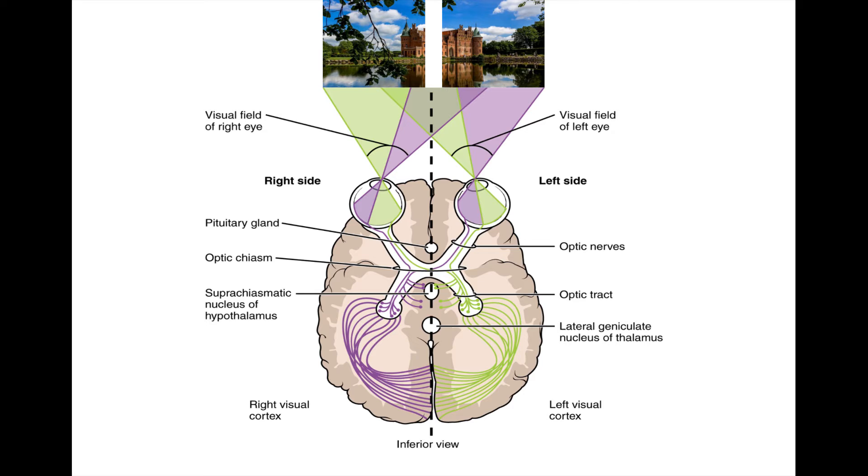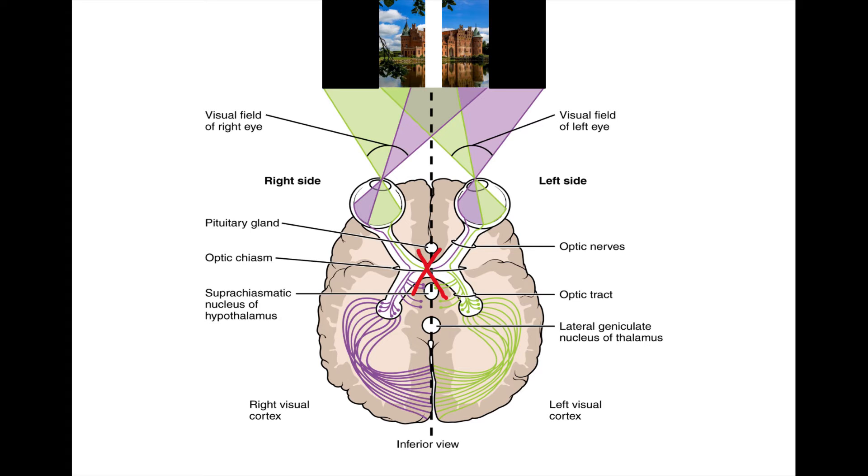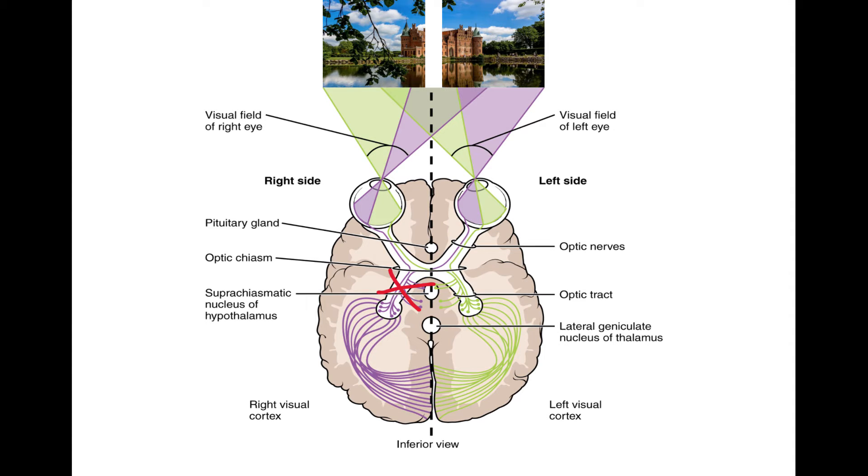If damage occurs in the optic chiasm, in contrast, it would result in bitemporal hemianopsia, in which visual information is missing from the lateral fields of view, or those closer to the temples of the head. If, instead, the right optic tract were to become damaged, a left homonymous hemianopsia would result.